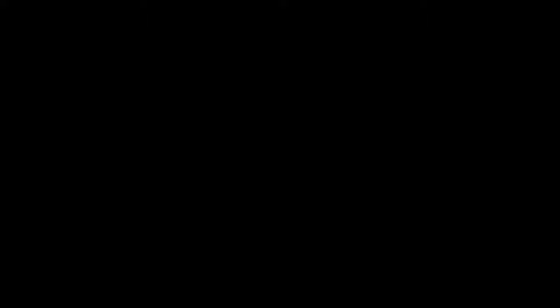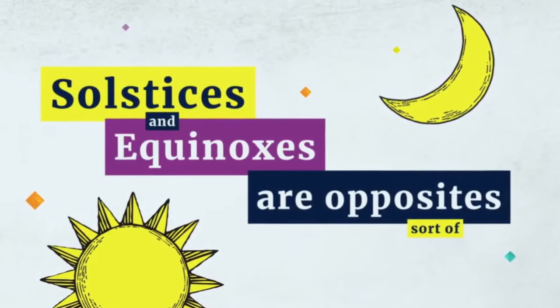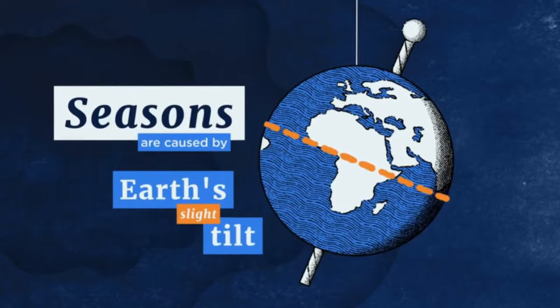As it turns out, solstices and equinoxes are sort of opposites. We know that seasons are caused by Earth having a slight tilt on its axis. As Earth wobbles around the Sun, different points of the Earth receive more or less sunlight throughout the year.